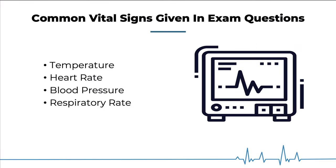What we'll do is go through every single vital sign you will see on the USMLE, and I'll give you the highest yield scenarios. Remember, this is not a comprehensive list, but these are the ones I have seen through practice questions and tutoring. We need to look at the extremes — for temperature, hyperthermia and hypothermia; for heart rate, tachycardia and bradycardia, and so on.